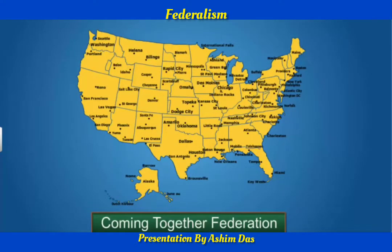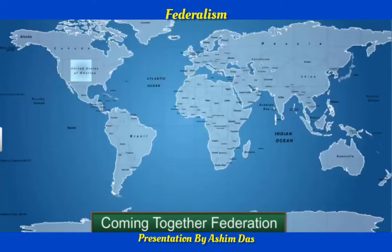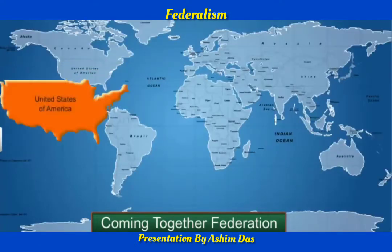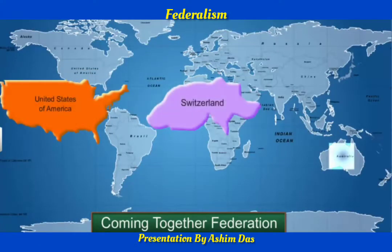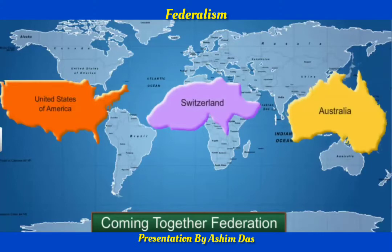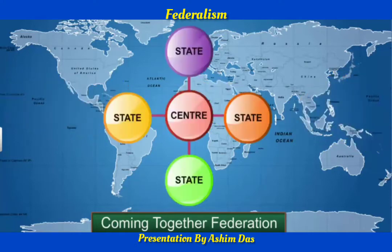USA, Switzerland, and Australia are examples of coming together federations. In these countries, all the constituent states usually have equal power and are strong vis-à-vis the federal government.